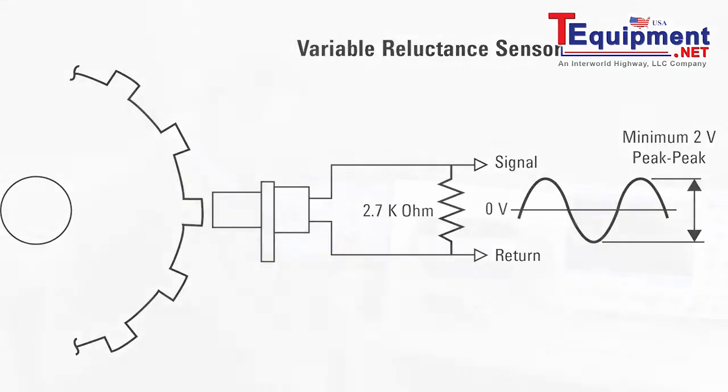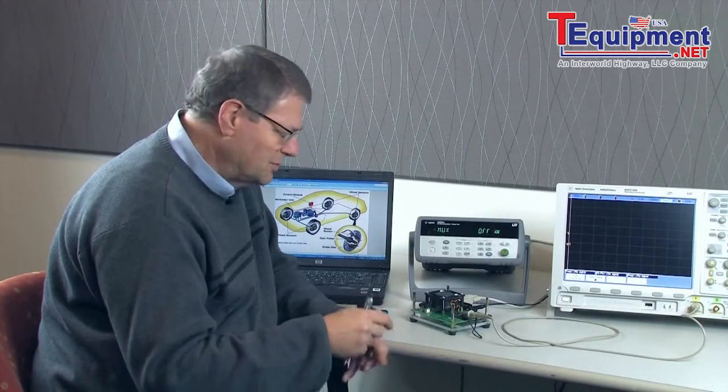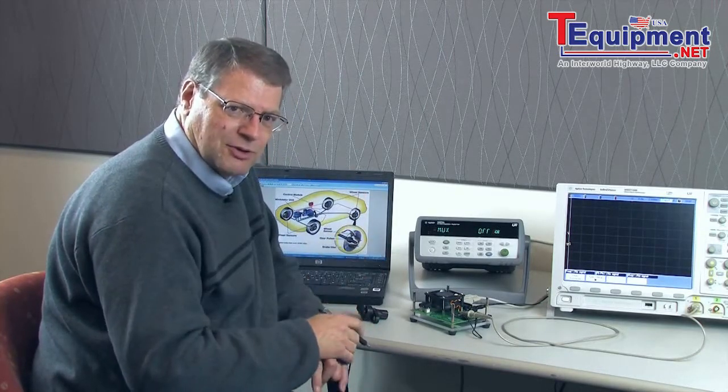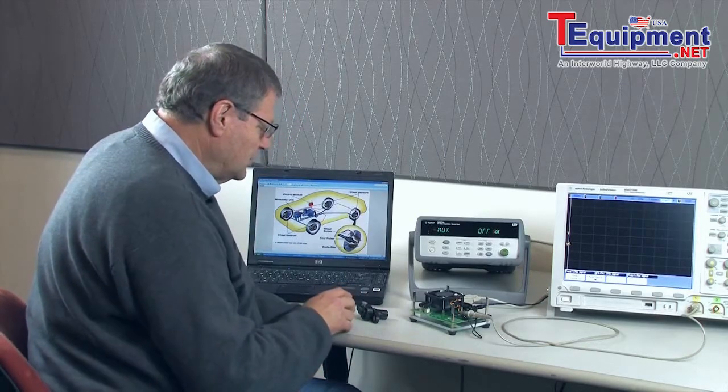Now the problem is the faster you go the bigger the pulse and the more narrow the pulse and sometimes that can be a problem. Sometimes you have to amplify it because they're very small, other times it may get so big that you actually have to clamp it. But it's a very common sensor.